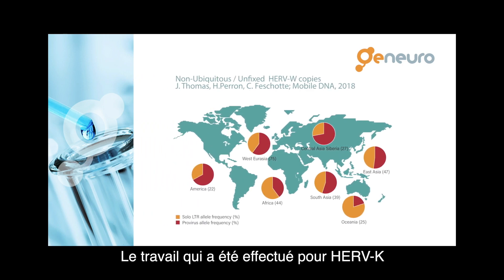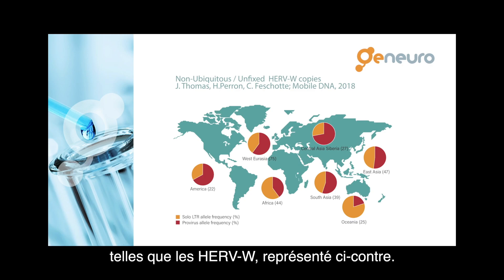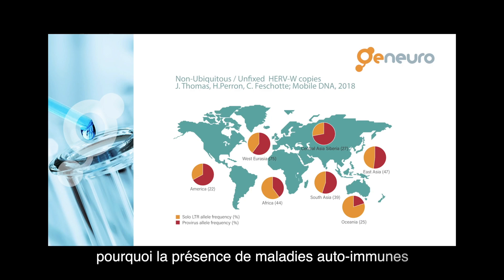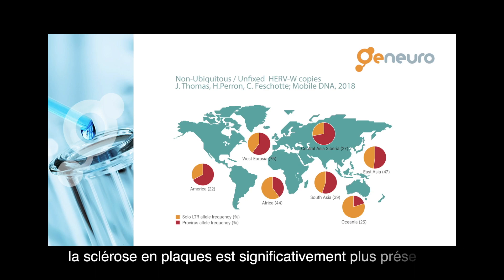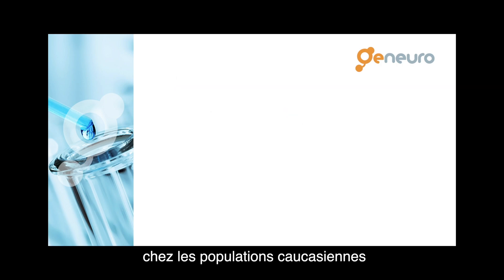The work done for HERV K is now being repeated with sequences of other HERV families, like HERV W, represented here. This diversity may be the basis for understanding why the prevalence of autoimmune diseases is so different between human populations. For example, no classical gene may explain why multiple sclerosis has a much higher prevalence in Caucasian populations than in the other human groups.